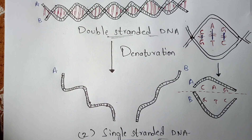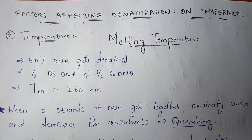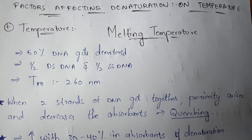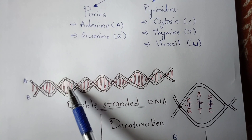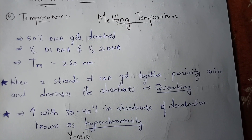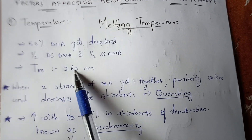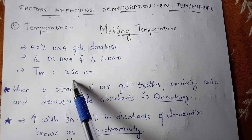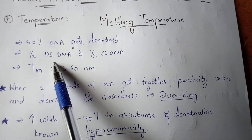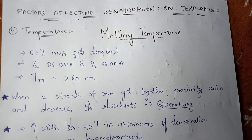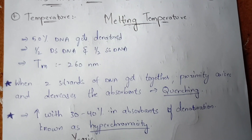Now let us look at the factors which affect denaturation. The main factor is temperature. The temperature at which 50% of DNA gets denatured is called the melting temperature, denoted by Tm. At 50% denaturation, only half of the double-stranded DNA is converted to single-stranded DNA. The wavelength used to monitor this is 260 nanometers.